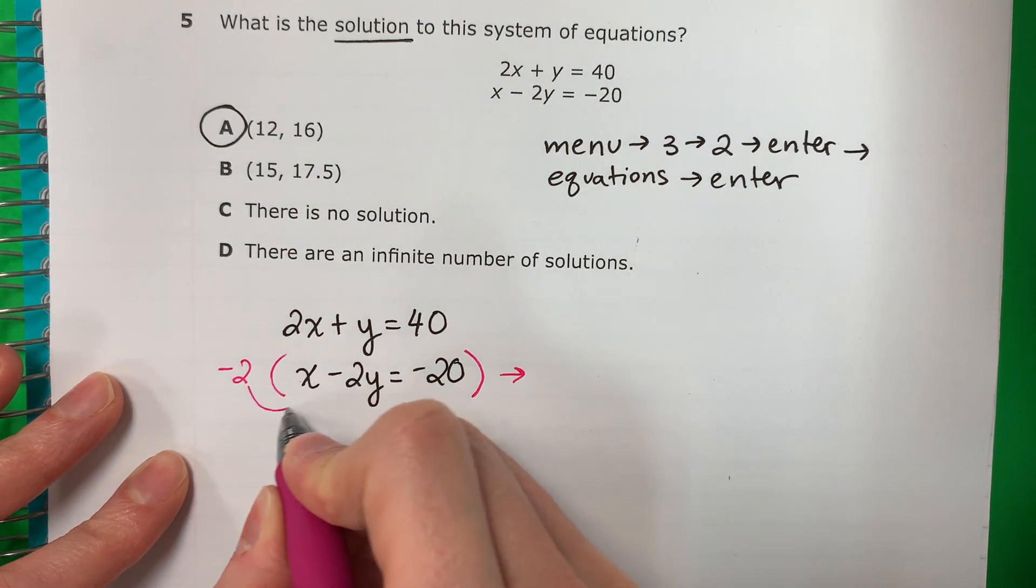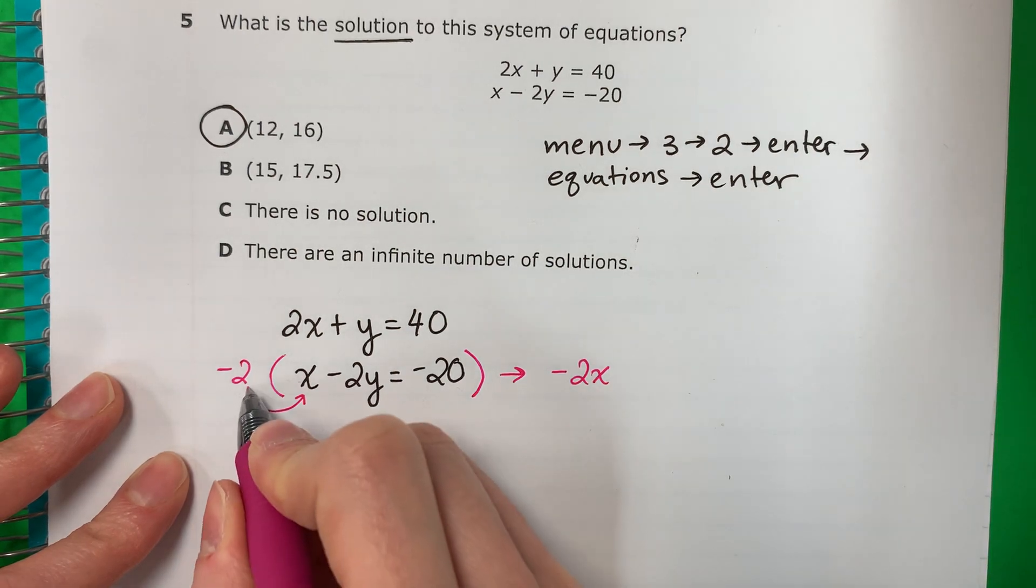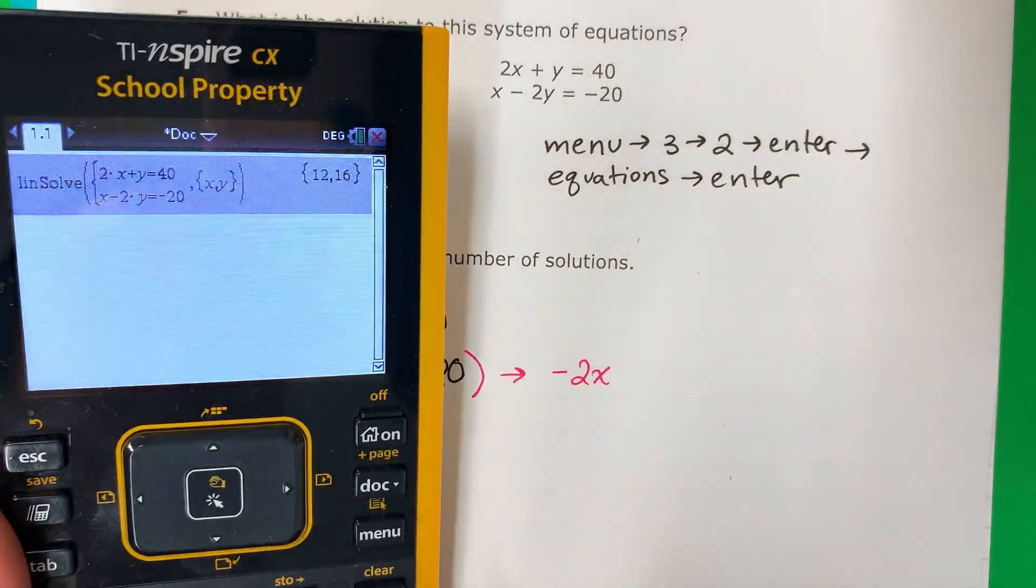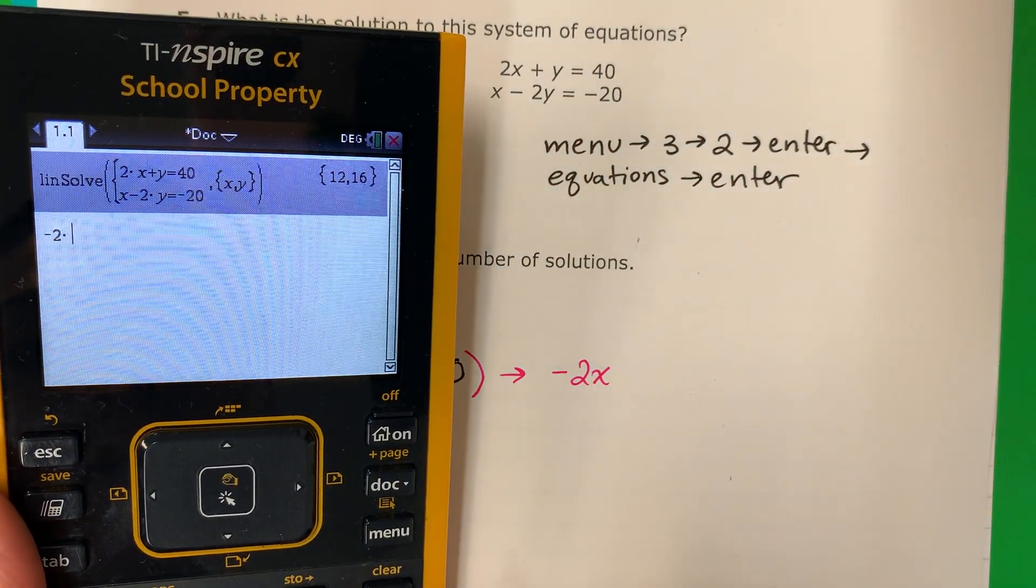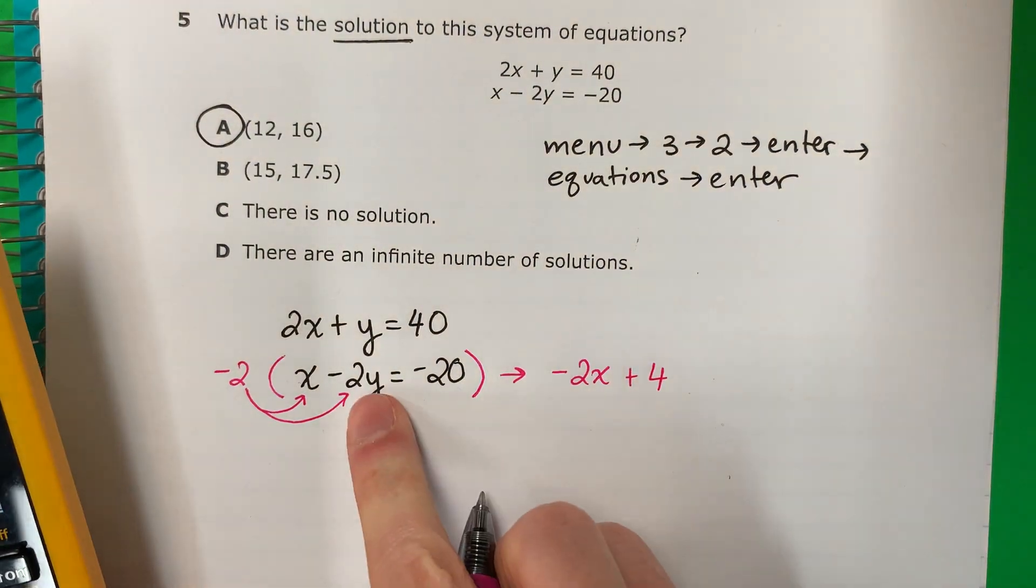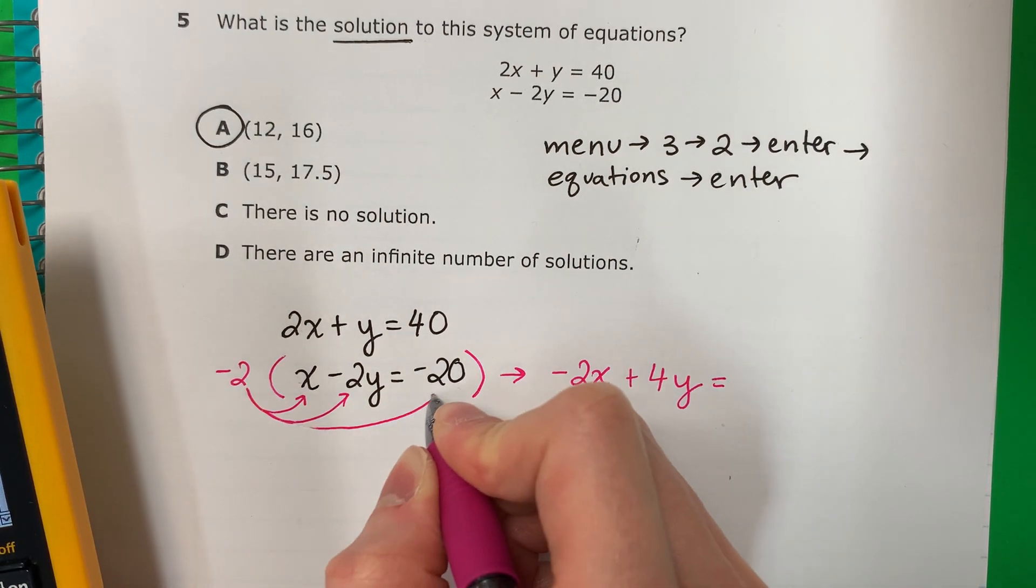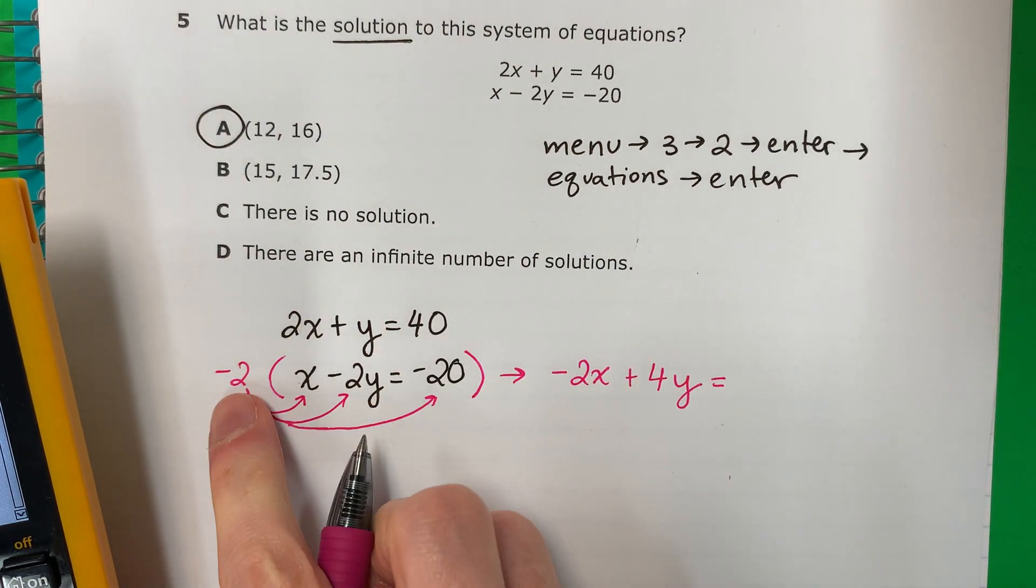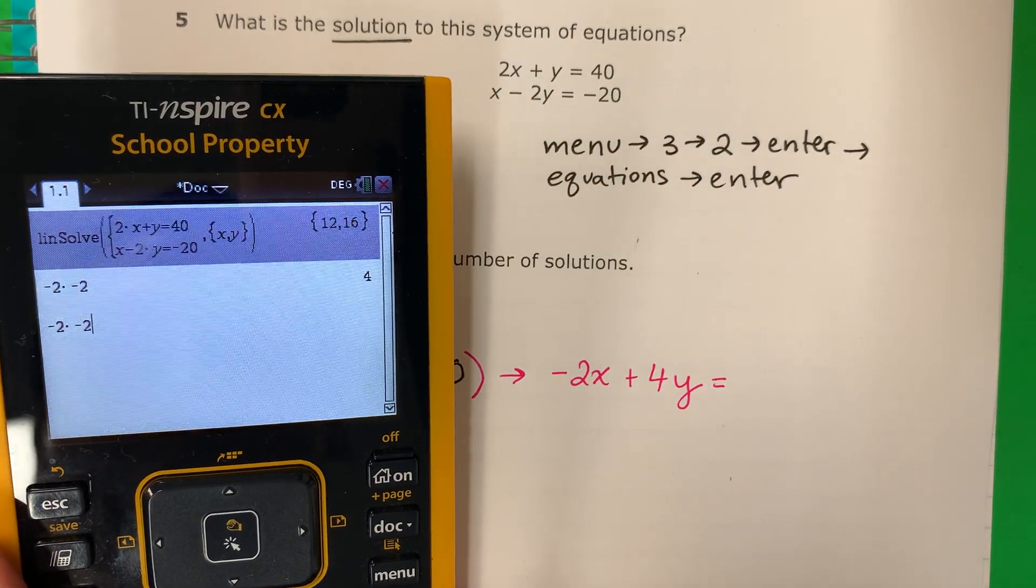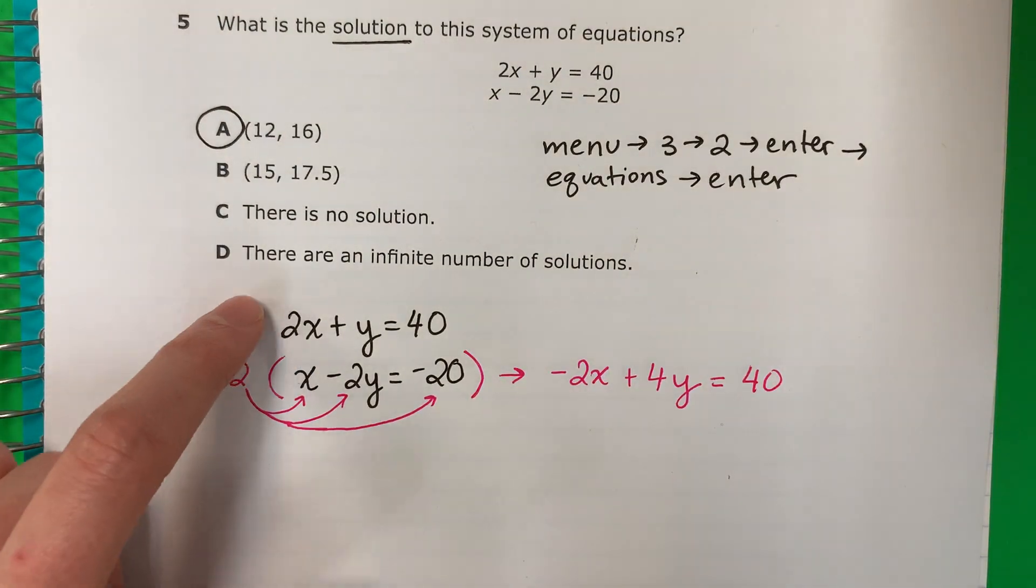So I'm going to do negative 2 times x, negativo 2 por x. So that is negative 2x, and then again, otra vez, negative 2 times negative 2, negativo 2 por negativo 2, positive 4, y, copy, equals. And then again, otra vez, negative 2 times negative 20, negativo 2 por negativo 20, 40. Positive.